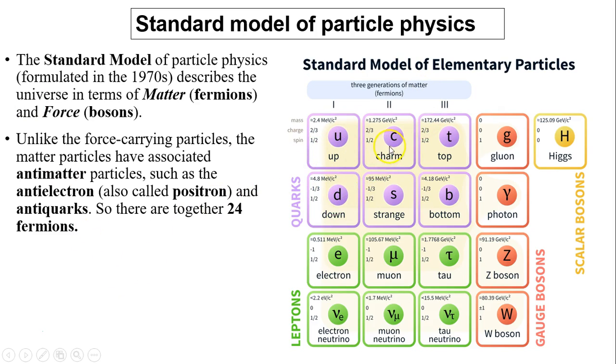Up, down, charm, strange, top and bottom. And here is the leptons: electron, muon, tau, and electron neutrino, muon neutrino, and tau neutrino. And here are the force carriers, all called bosons.